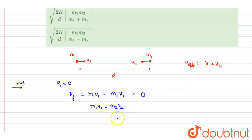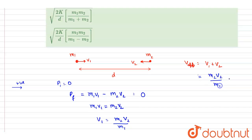From momentum conservation we get m1*v1 = m2*v2. We can substitute v1 = m2*v2 / m1 into the expression for speed of approach. This gives m2*v2/m1 + v2, which equals (m2*v2 + m1*v2) / m1.